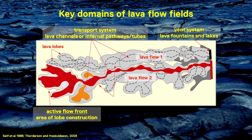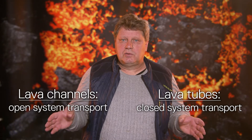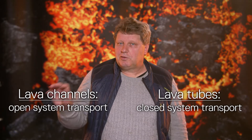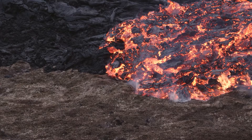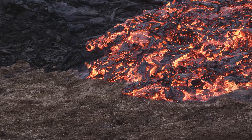The key domains of an active lava flow field are the vent, where magma comes up from depth to the surface; the transport system, which is usually either lava tubes or lava channels — lava tubes being a closed system and lava channels being open system transport; and the place of deposition, referred to as the active lava front, where the growth of the lava flow field takes place. The distinction between lava tubes and channels is very important because one is thermally insulating and the other is not.